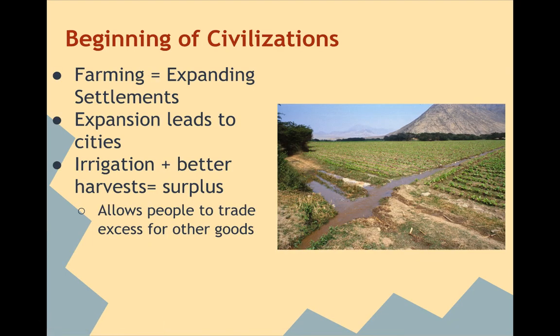Again, with the advent of farming, you have expanding settlements because you're going to have more food — therefore you can have a higher population. Expansion leads to cities. Irrigation plus better harvest equals a surplus. A surplus is when you have extra beyond what you need. This is going to allow people to start trading their excess crops for other goods. If you have more wheat than you need to feed your family, you can trade that excess wheat for better tools to increase your crop yield in the later season.